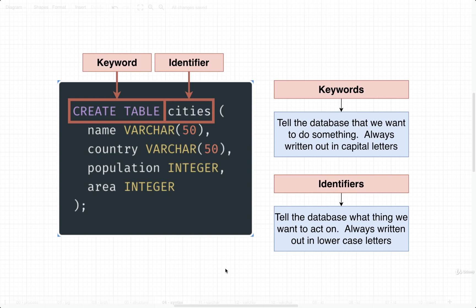Identifiers are how we tell the database what we want to operate on. So in this case, create table is an example of a keyword, and cities is an example of an identifier. Keywords are always going to be capitalized, and identifiers will always be all lowercase.